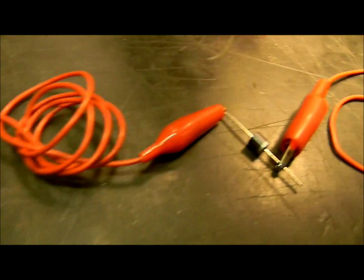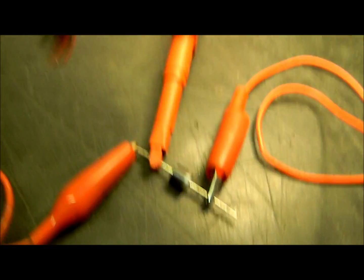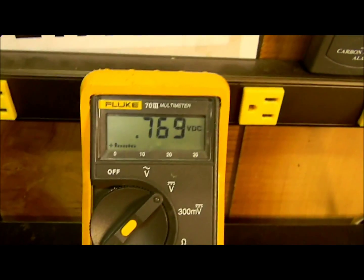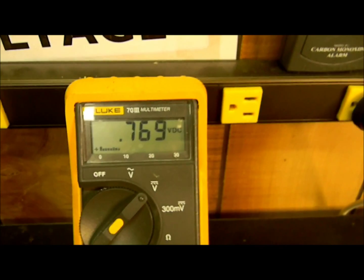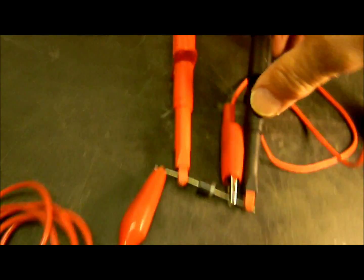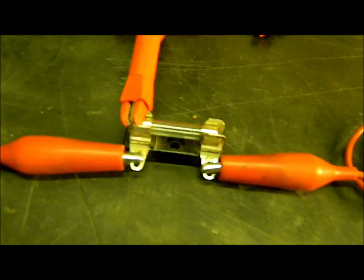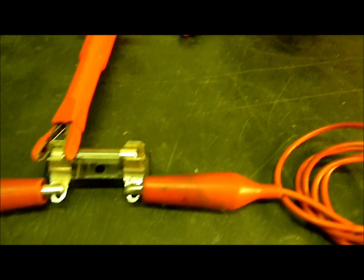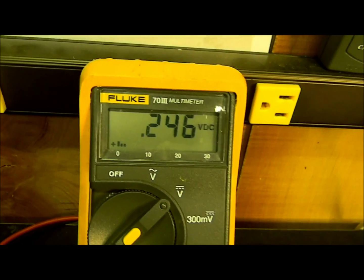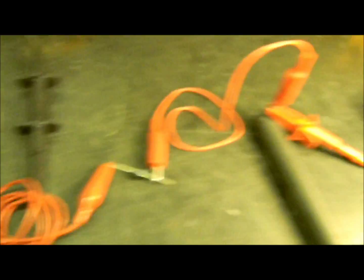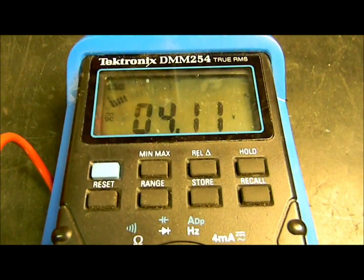We can actually measure that. I'm hooking up the Fluke meter here and there's our 0.769 volts. As a matter of fact, you have a small voltage drop even across the fuse - about a quarter of a volt drop just across the fuse.